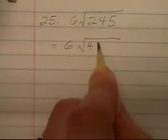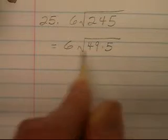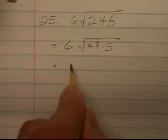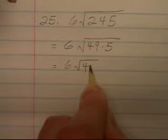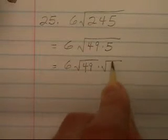So this will be forty-nine times five, and then we'll break this up. That'll be equal to six times the square root of forty-nine times the square root of five.